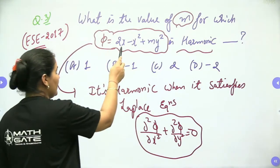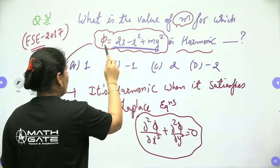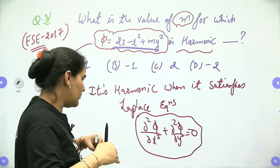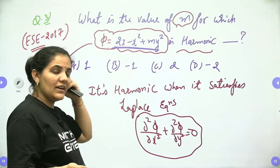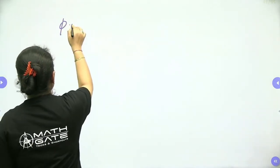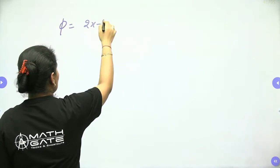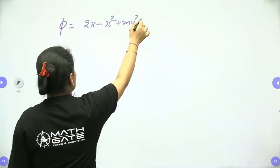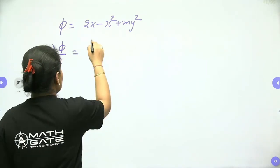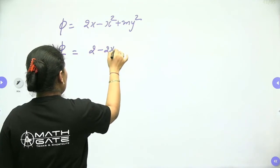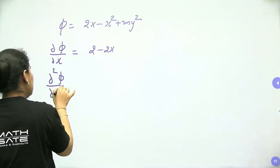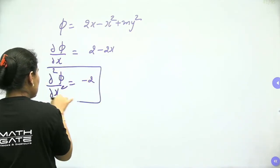First, the partial derivative of φ with respect to x: ∂φ/∂x equals 2 minus 2x. Then the second derivative: ∂²φ/∂x² equals minus 2.